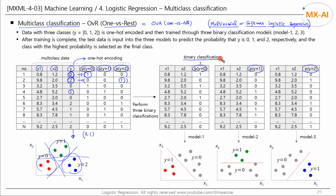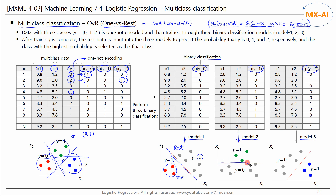We can train each data set using three binary classification models. In this data set, Y is either 1 or 0 — classify the red data points and the remaining data points. This is the decision boundary for the first data set. The second data set can be separated like this, and the third data set can be separated like this.